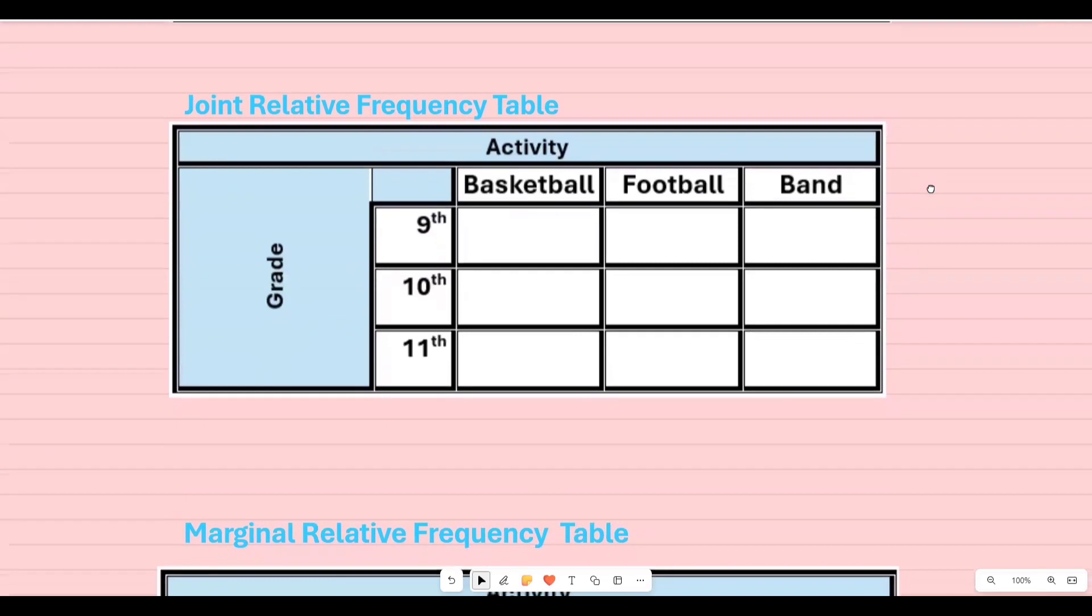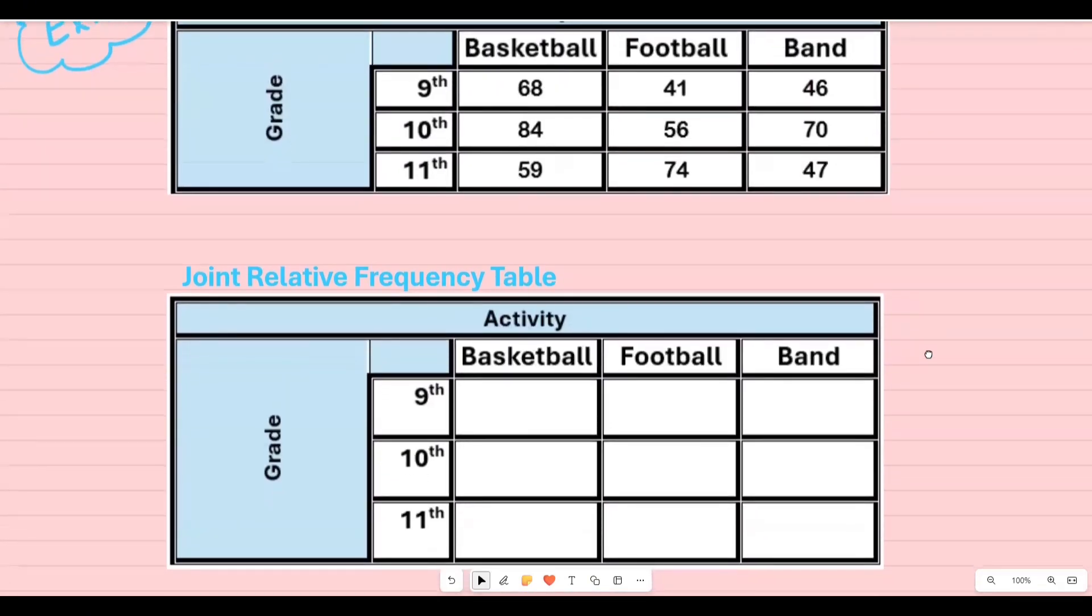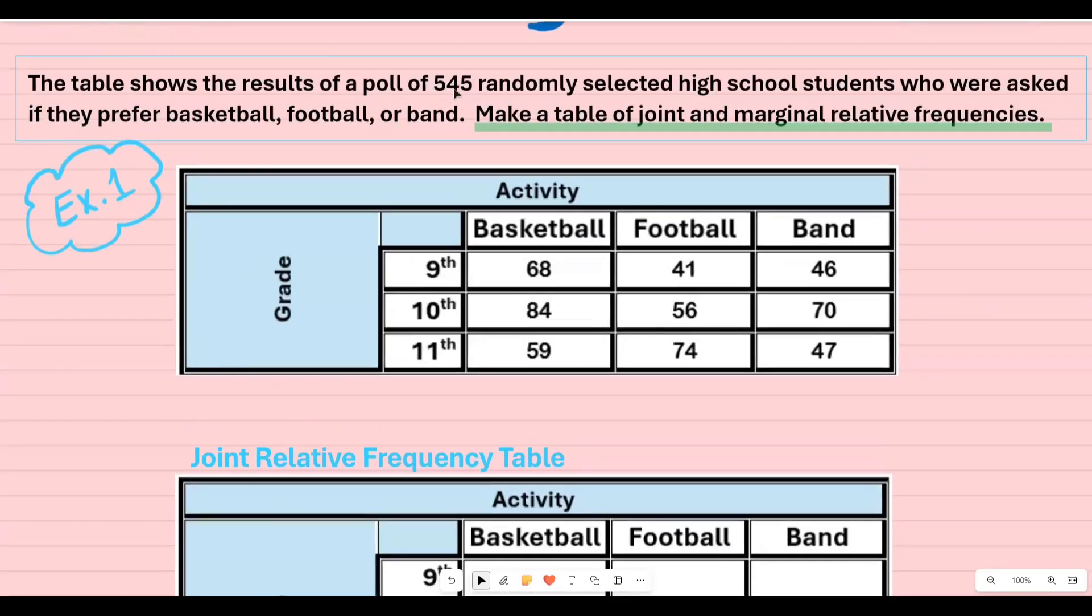The first table that we're going to set up is the joint relative frequency table and what we have to do is take each cell and divide it by the total amount of people. In this case we're talking about people.